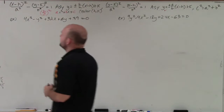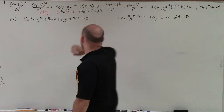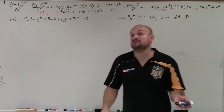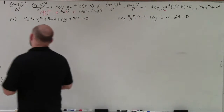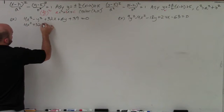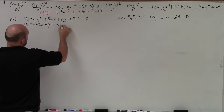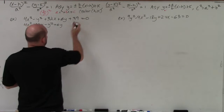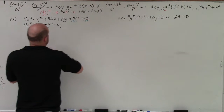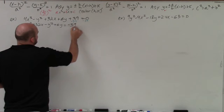The first thing we want to do is notice how our x's are grouped together and our y's are grouped together. So we're going to group our x's and our y's. I have 4x² + 32x − y² + 6y, and then I'll subtract 39 on both sides to get the numbers on their own side.